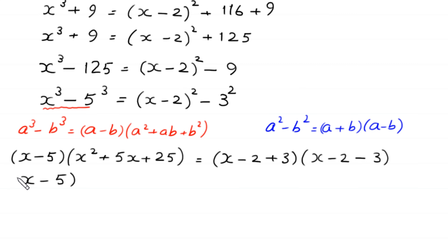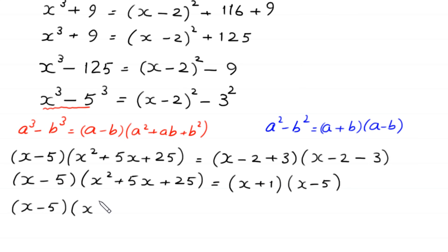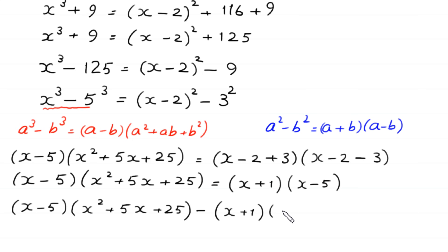So we have (x minus 5)(x squared plus 5x plus 25) equals (x plus 1)(x minus 5). We move the right side expression to the left side, so (x minus 5)(x squared plus 5x plus 25) minus (x plus 1)(x minus 5) equals 0.